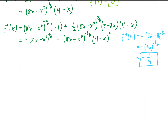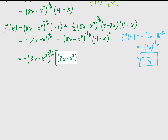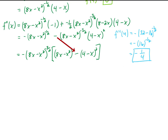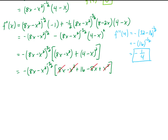Let's prep the second derivative for another differentiation. We factor out negative (8x minus x squared) to the negative 3/2 power from each term. From the first term, what's left is 8x minus x squared to the first power; from the second term, we're left with (4 minus x) squared, and because we factored a negative out, the minus turns into a plus. Simplifying what's in the brackets — foiling out the parentheses — everything cancels except for 16, leaving us with a fairly simple function.